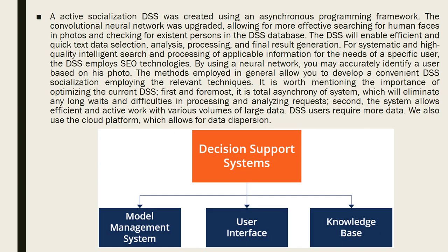In active socialization, the DSS was created using an asynchronous programming framework. A convolutional neural network was utilized, allowing for more effective searching for human faces in photos and checking for existing persons in the DSS database. The DSS will enable efficient and quick text data selection, analysis, processing, and final result generation for systematic and high-quality intelligent search and processing of applicable information for specific users, the DSS employees, and SEO technologies. By using a neural network, you may accurately identify a user based on their photo.